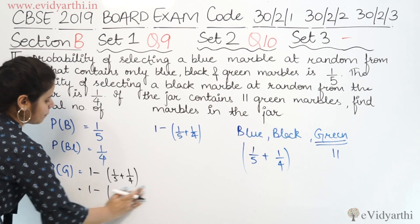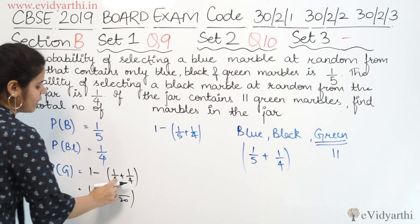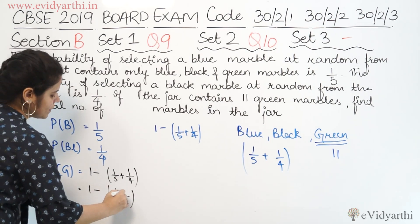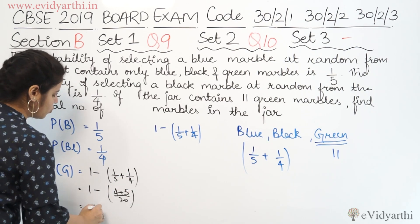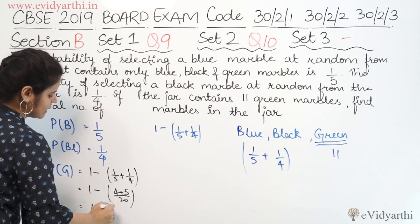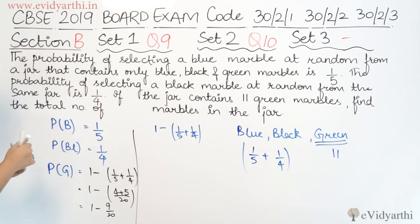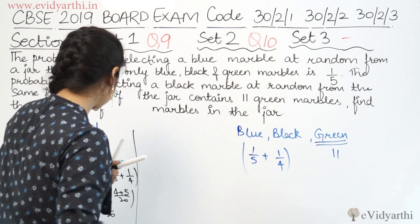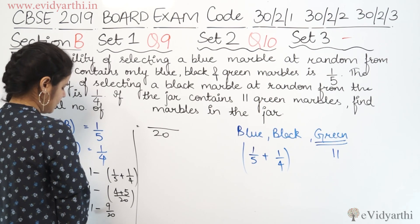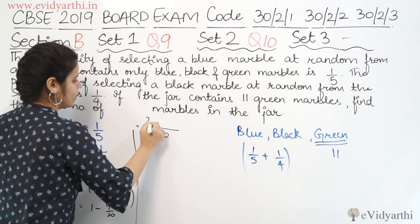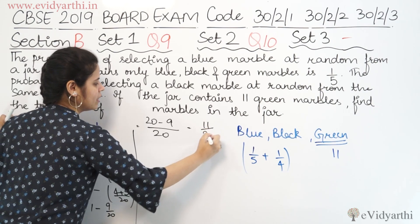So this is 1 minus — taking LCM of 5 and 4, which is 20. So we get 4 plus 5 upon 20, which equals 9/20. Therefore, 1 minus 9/20 — taking LCM again gives 20/20 minus 9/20, which equals 11/20.